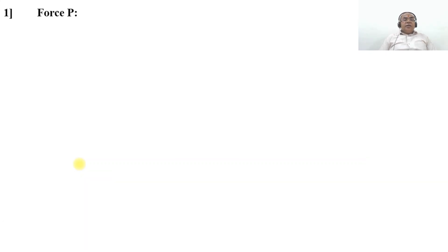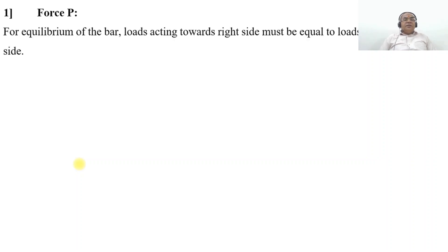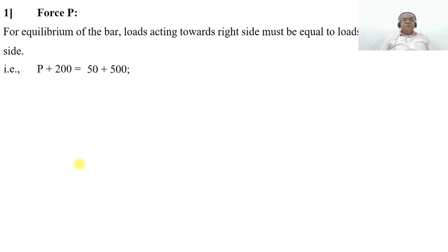To summarize, the force P for equilibrium: loads acting towards the right must equal loads acting towards the left. P plus 200 equals 50 plus 500, so P equals 350 kilo Newton.